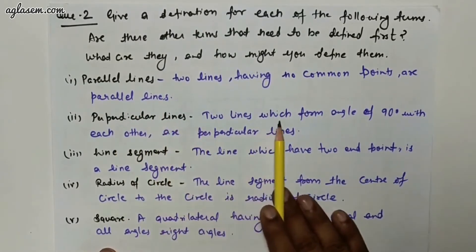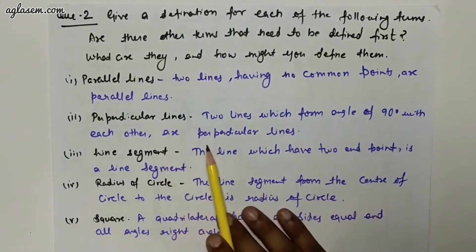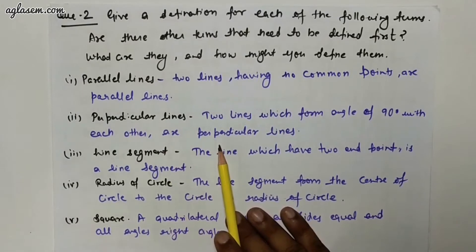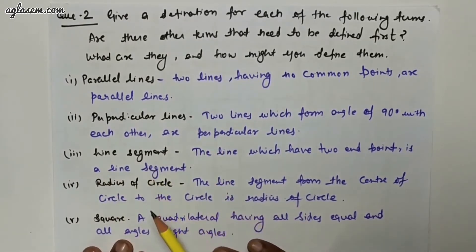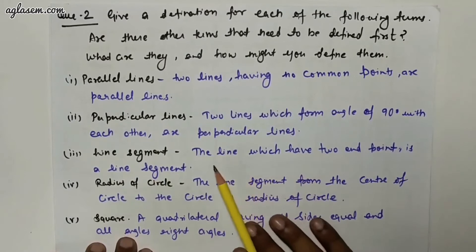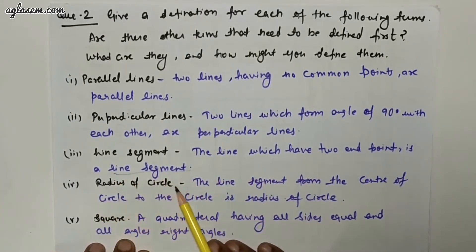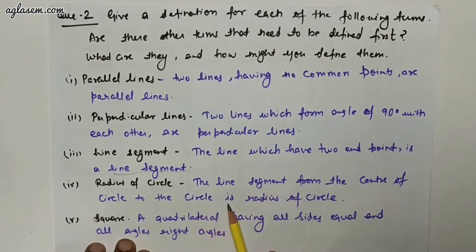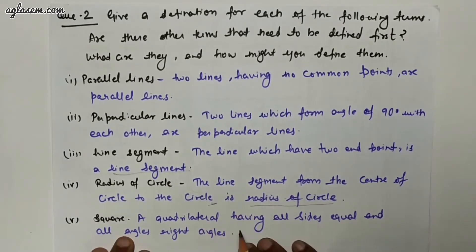Third, line segment — a line which has two end points is a line segment. Fourth, radius of a circle — the line segment from the center of a circle to the circle is the radius of the circle.